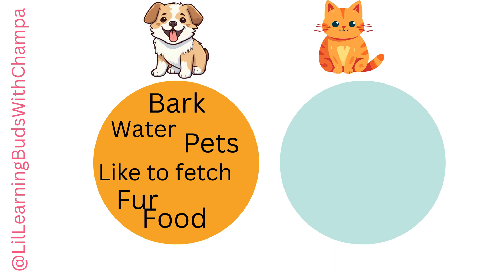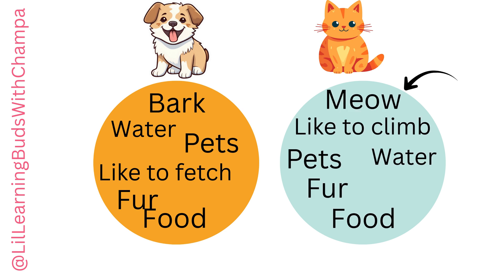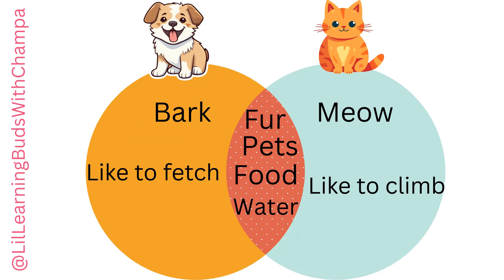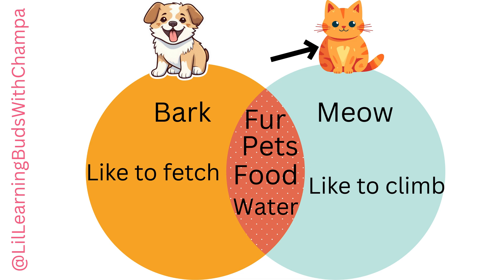Let's do the same thing with cat. When you write the Venn diagram and overlap the circles, what was common? Fur, Pets, Food, and Water. What was unique to the dog? Bark and like to fetch. What was unique to the cat? Meow and like to climb.